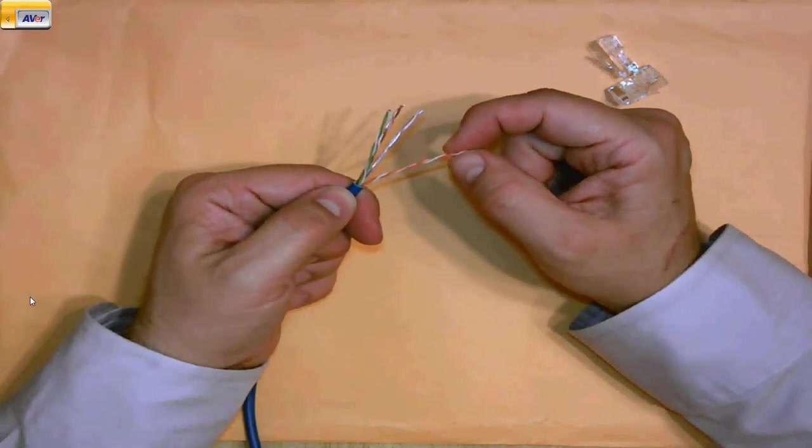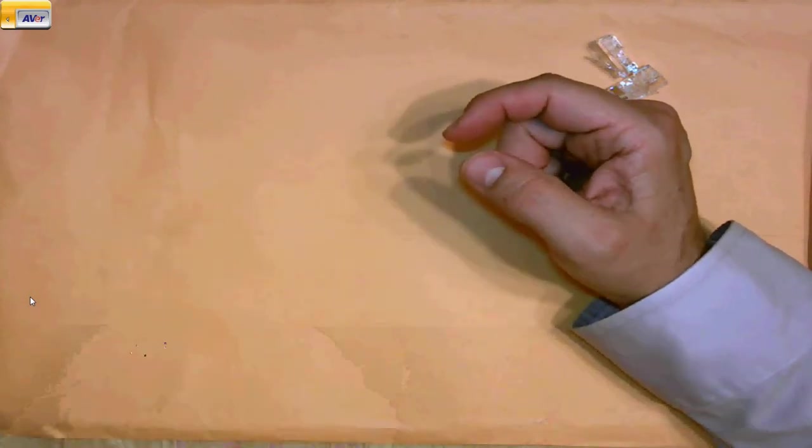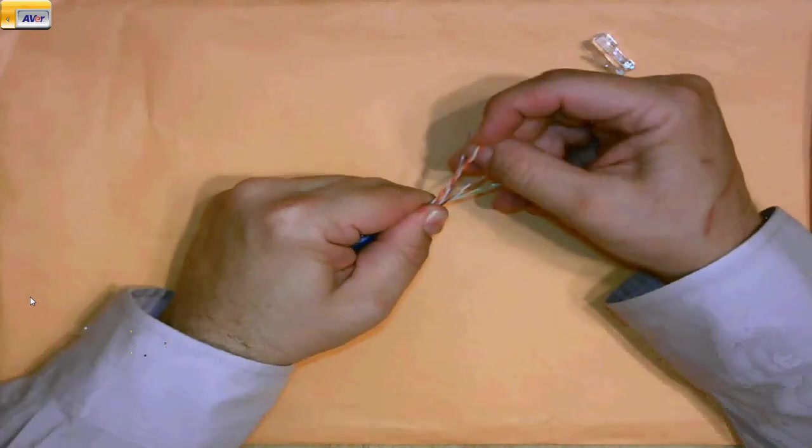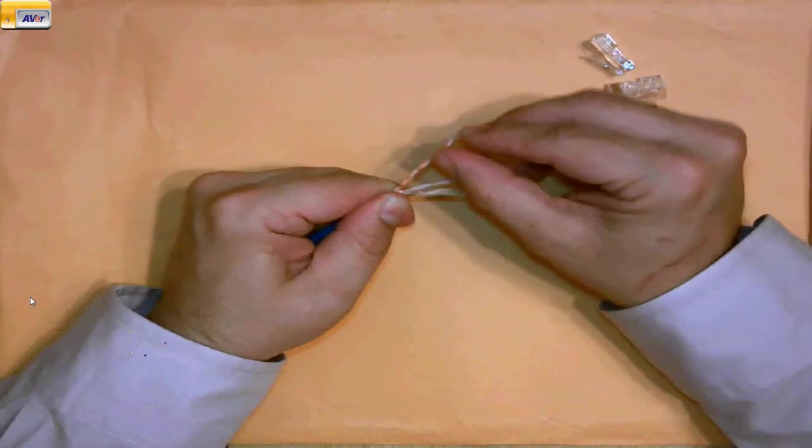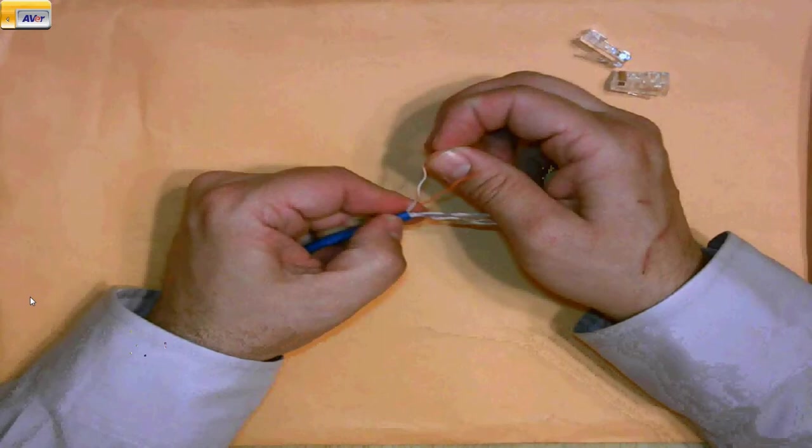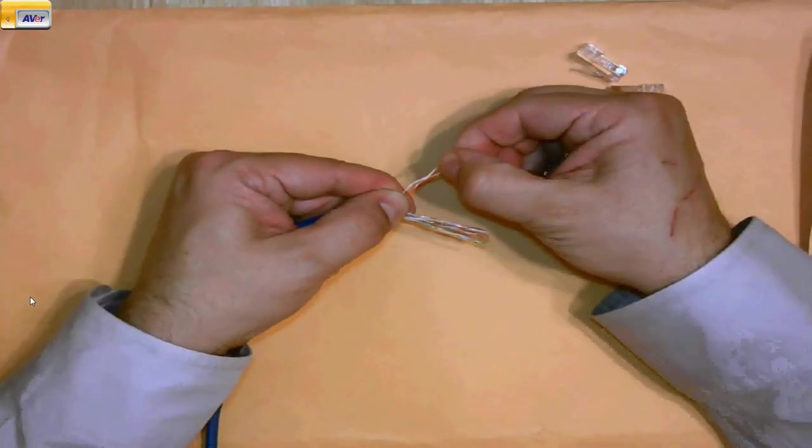So my unshielded twisted pair wire I'm going to put in a certain order. And it's not an order that will make sense until you understand historically why it's done this way. First, I'm going to start with my orange. And I'm going to untwist it because I need a lot of it untwisted.